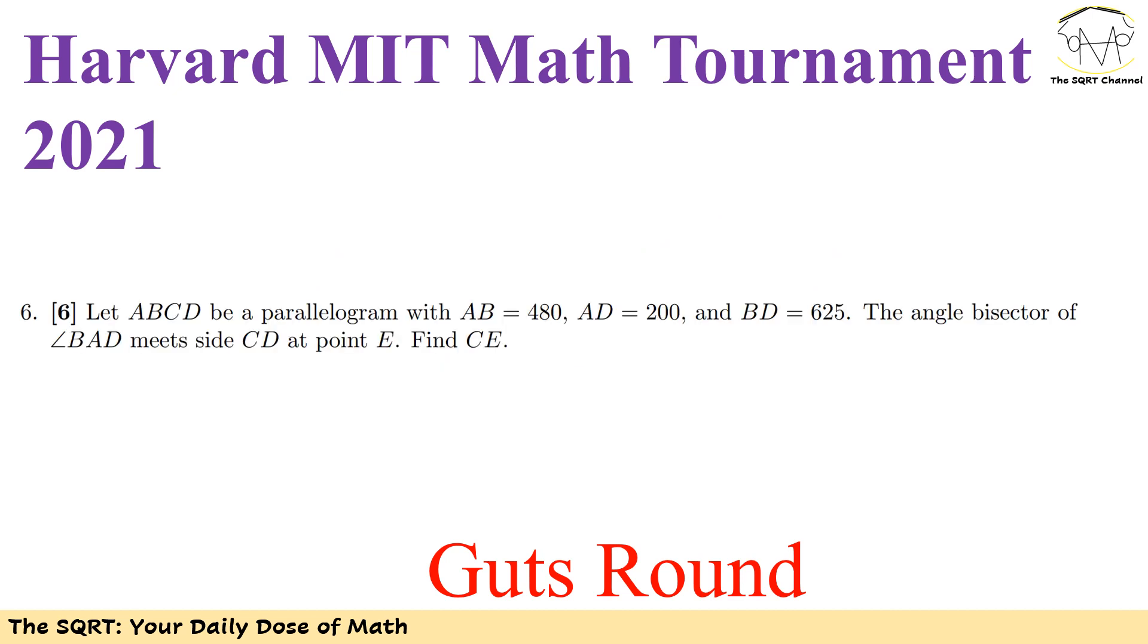In this problem it says let ABCD be a parallelogram. AB equals 480, AD equals 200, BD equals 625. The angle bisector of angle BAD meets side CD at point E. We want to find CE here.